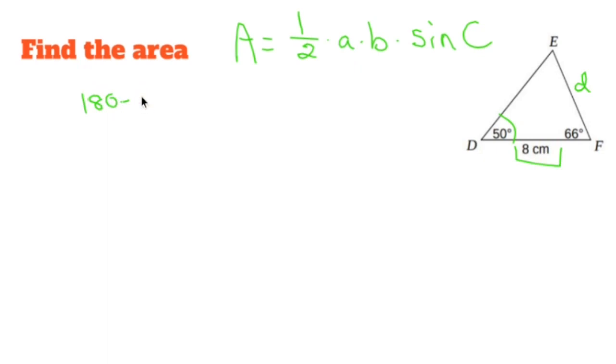180 minus 50 minus 66 gives me the measure of angle E. And the measure of angle E in this case is going to be 64. Nintendo 64. But in this case, 64 degrees.